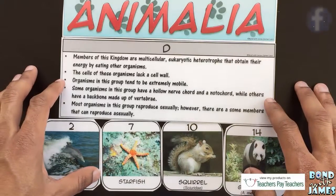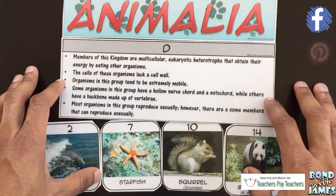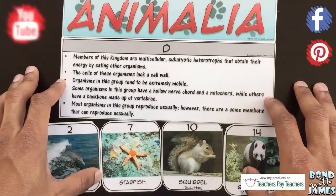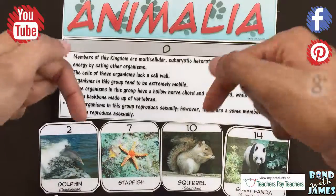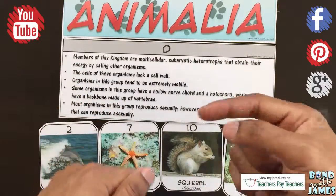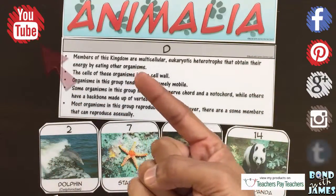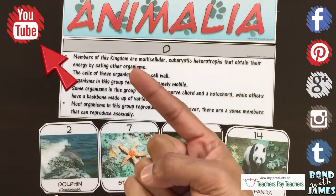This is the Kingdoms of Life card sort activity. Remember to subscribe by clicking on the button below the video or on the link in the upper left-hand corner of this video.